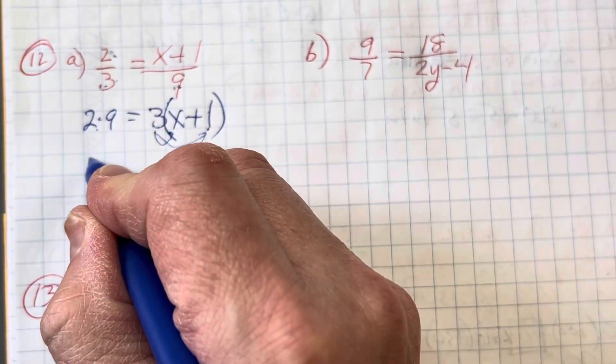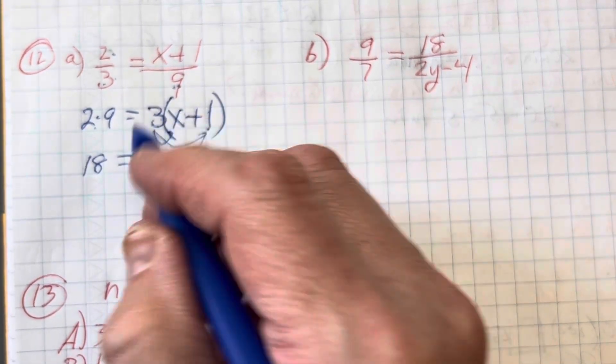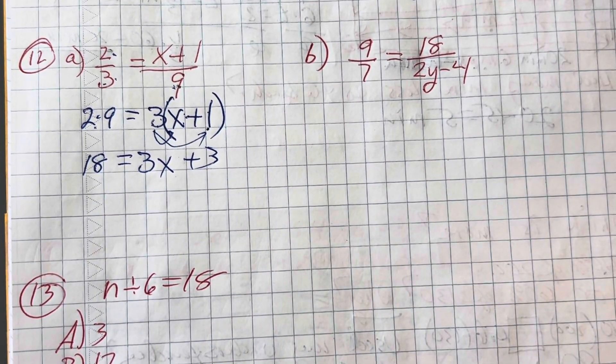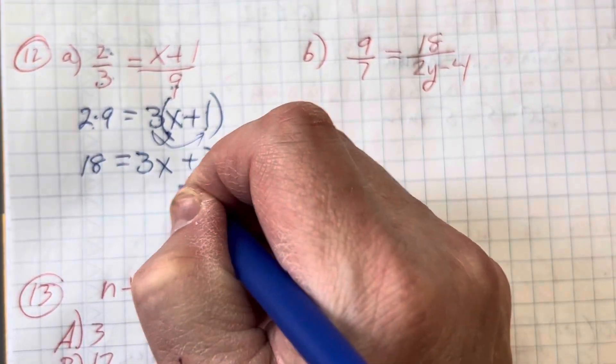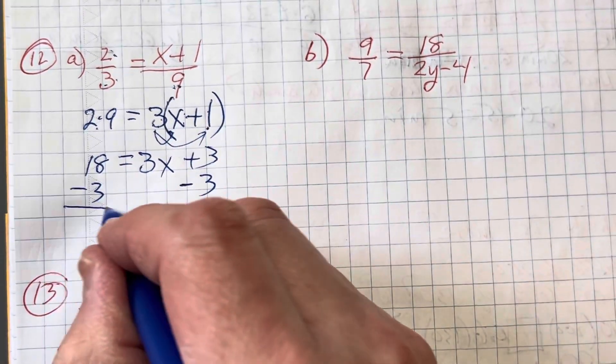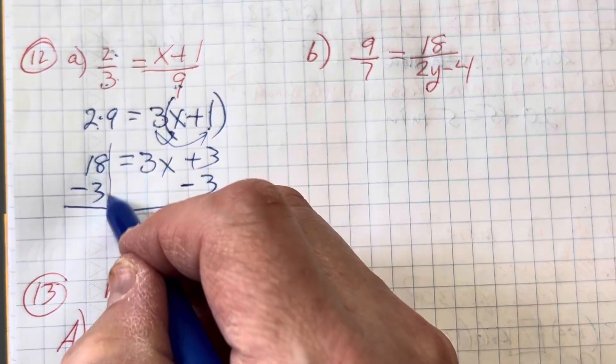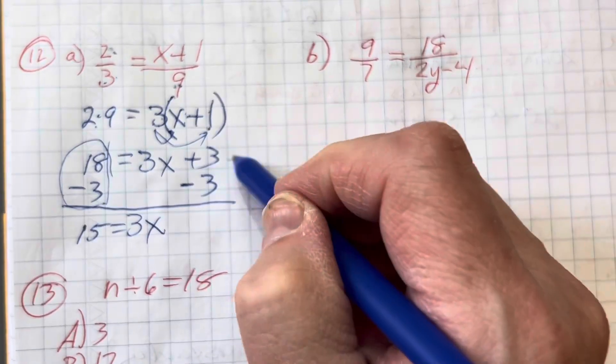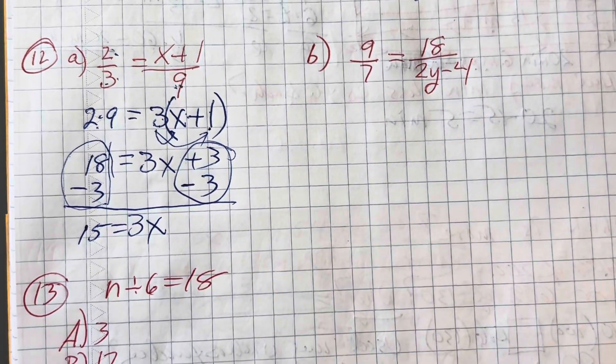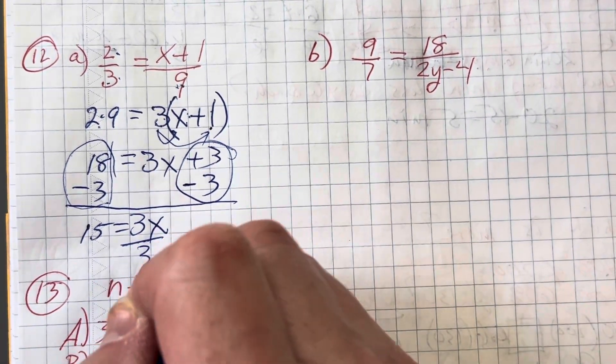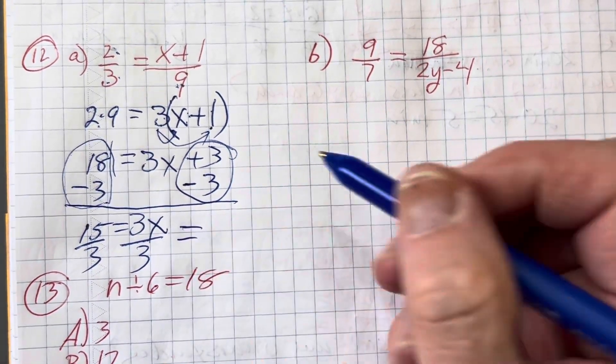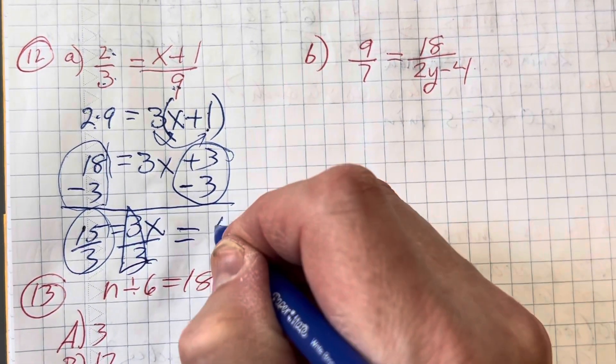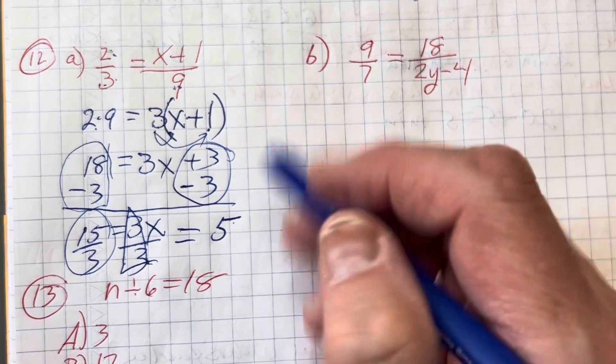This side will give me 18 equals 3x plus 3. Well I guess I'll subtract 3 from each side so that I can get the terms with the x on one side and the constants on the other. This will become 15 equals 3x because this is a giant 0. Now I'm going to divide both sides by 3 and that gives me what? This is a giant 1. 15 divided by 3 is 5. x equals 5. There's your solution.